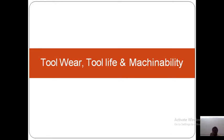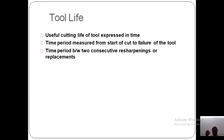The tool is subjected to wear continuously when the machining operation takes place. The tool wear increases considerably and the tool loses its ability to cut efficiently, and must be re-ground. If not, it will totally fail. There are three ways of expressing tool life. The first is the useful cutting life of a tool expressed in terms of time — the time period measured from start of cut to failure of the tool, and time period between two consecutive re-sharpenings or replacements.